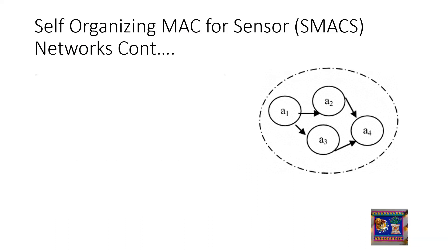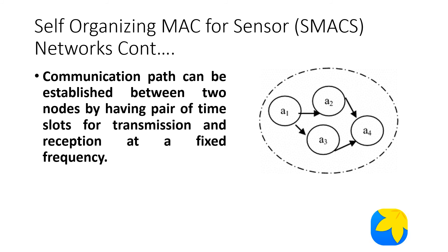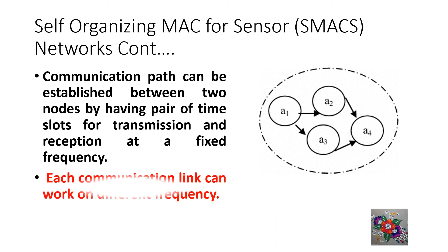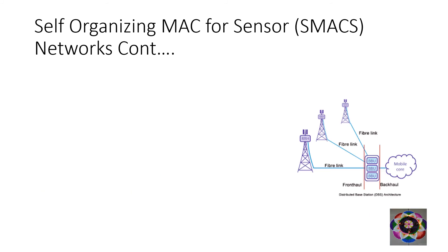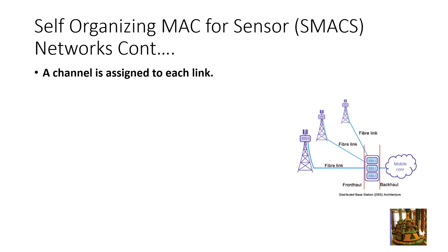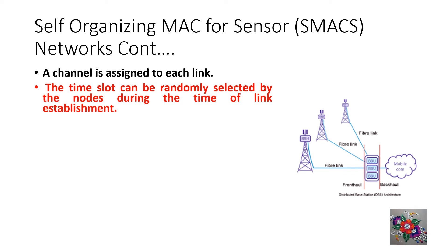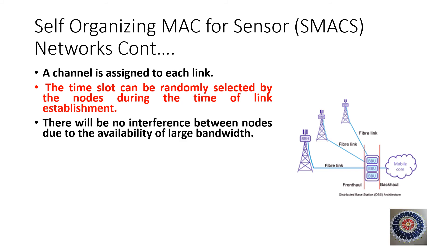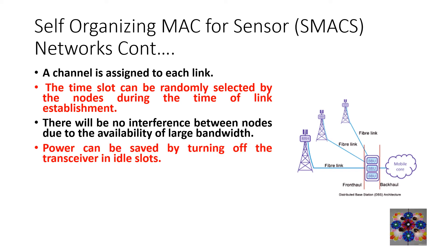A communication path can be established between two nodes by having a pair of time slots for transmission and reception at a fixed frequency. Each communication link can work on a different frequency, and a channel is assigned to each link. The time slots can be randomly selected by the nodes during link establishment. There will be no interference between nodes due to the availability of large bandwidth. Power can be saved by turning off the transceiver in idle slots.